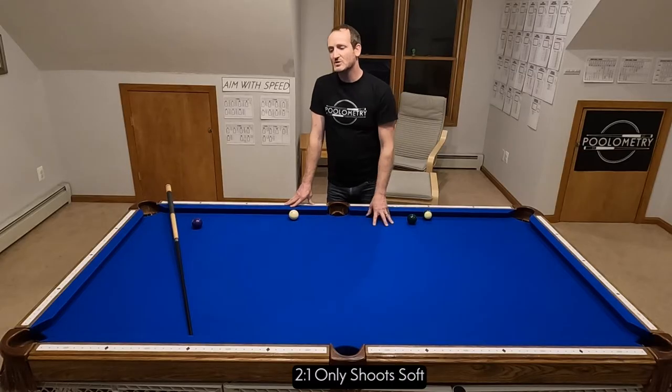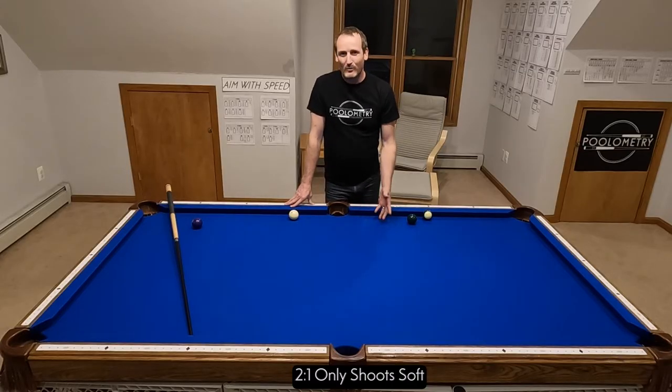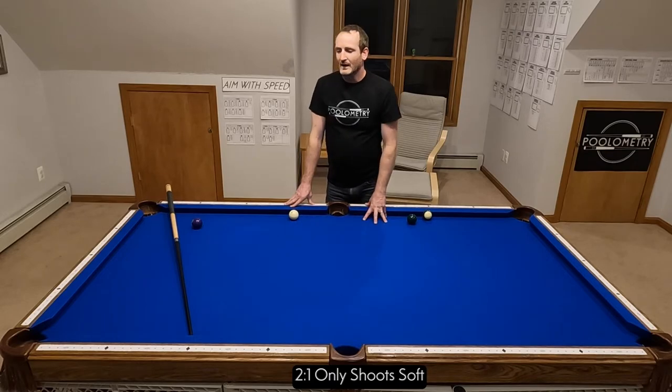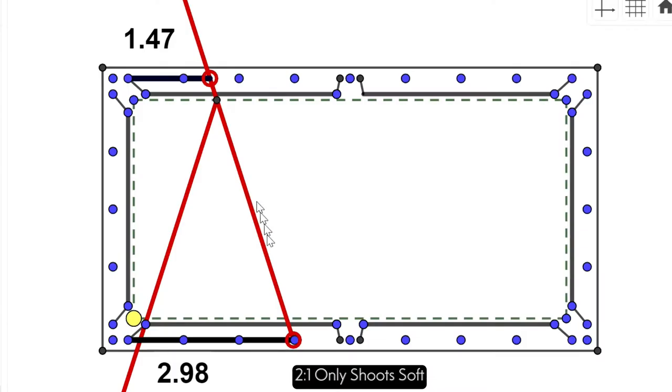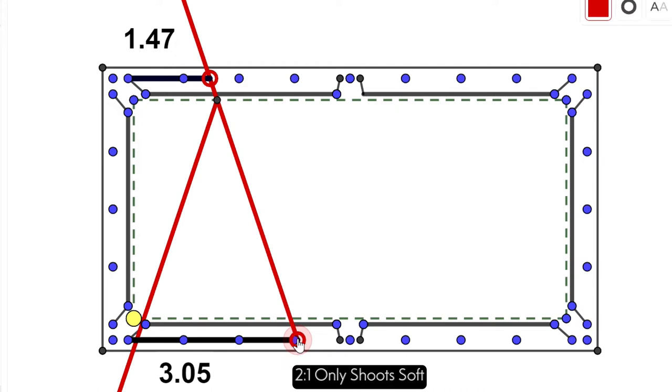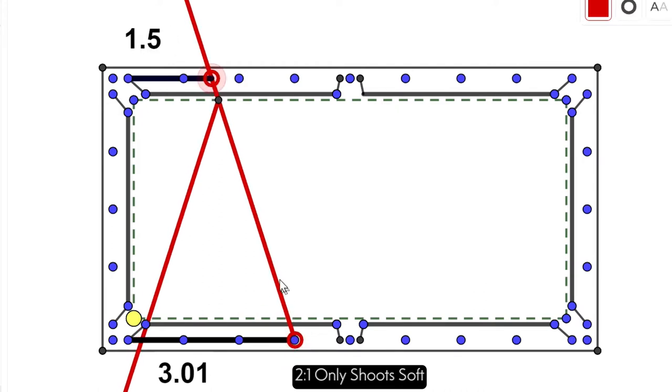People have come to trust the two-to-one system, but without realizing it's actually bending into the pocket. If you subscribe to a two-to-one system, that means I should align from three to 1.5. But the problem is, this is what actually happens. The ball rebounds at the rail groove. It never makes it to diamond 1.5 because that's not on the table. It actually rebounds closer to 1.6 or even a little more than that.